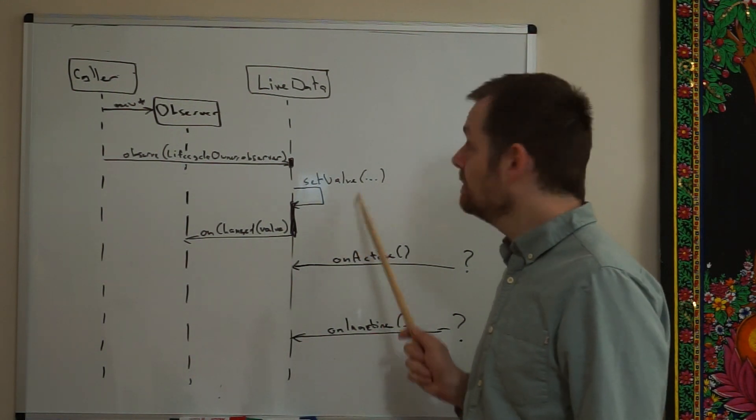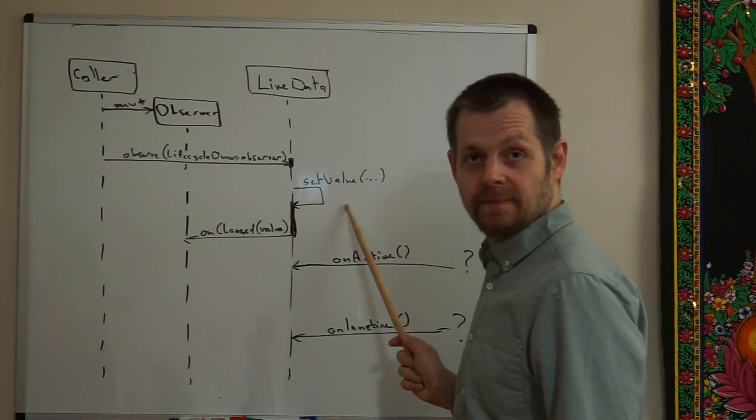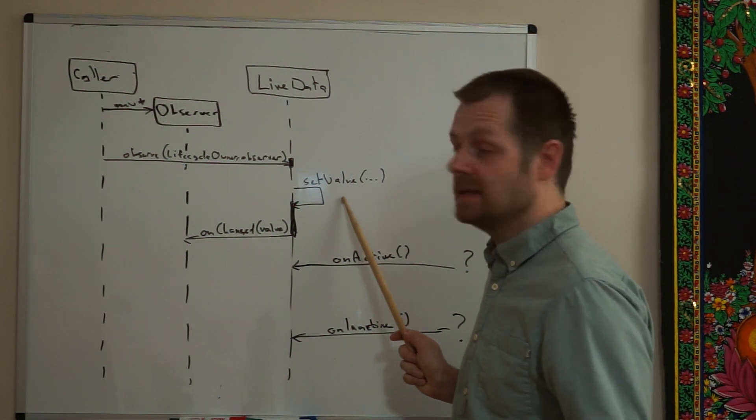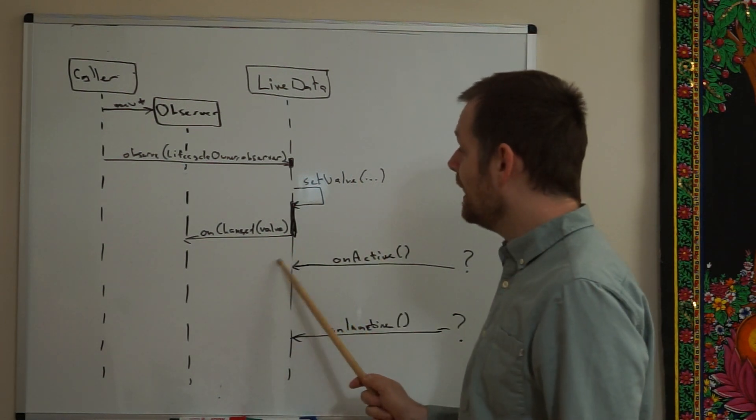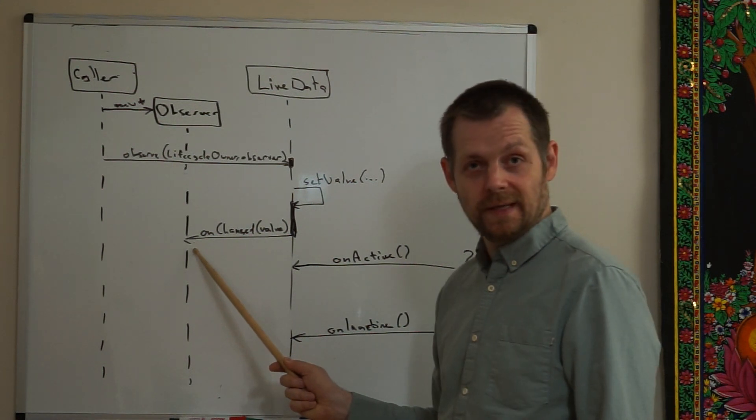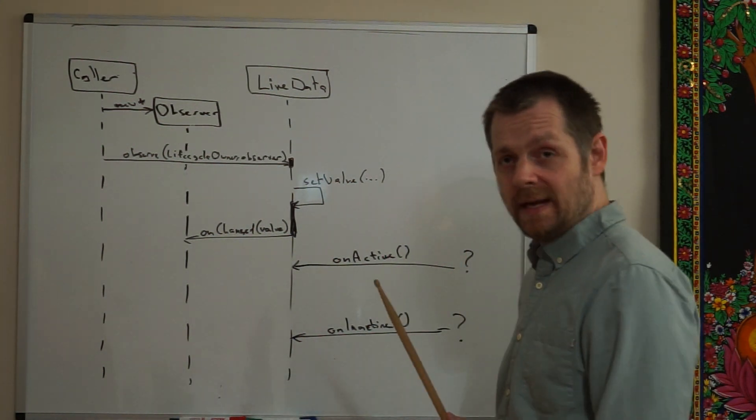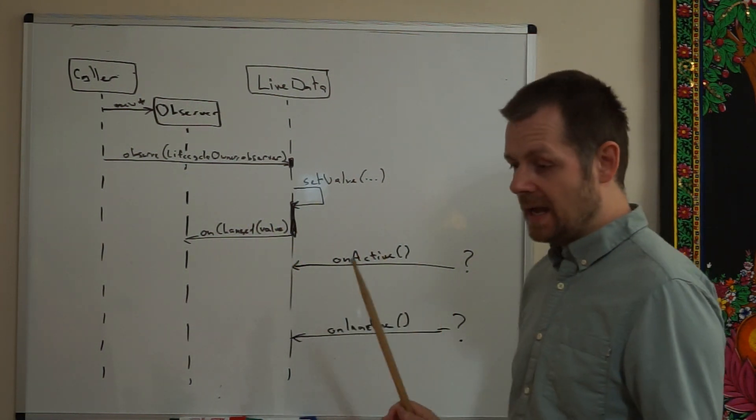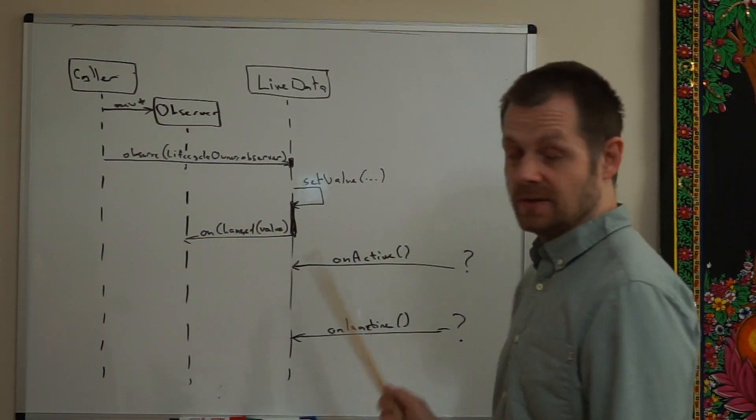When the LiveData value changes, in this case LiveData is setting its own value, although you may subclass LiveData and allow other things to set its value, an onChange callback will occur to the observer that you registered with the LiveData. At some point when the lifecycle owner transitions to a resumed and started state, onActive will be called.